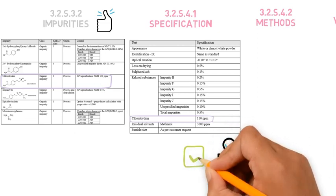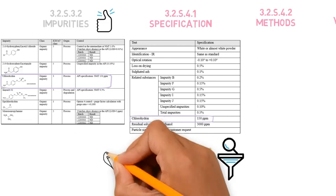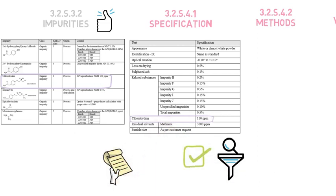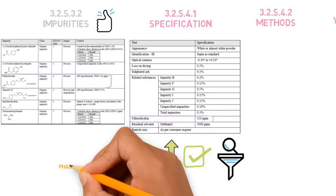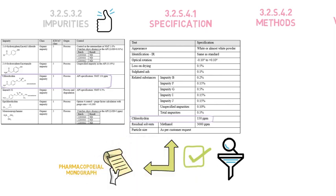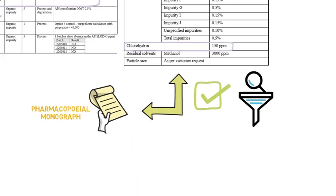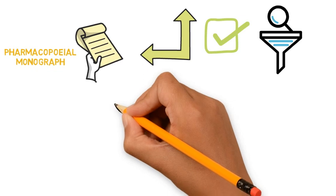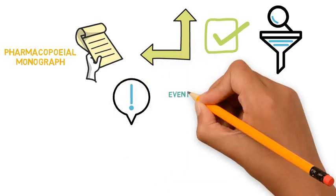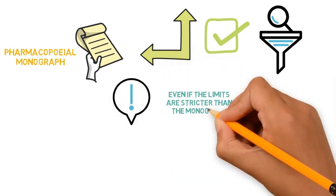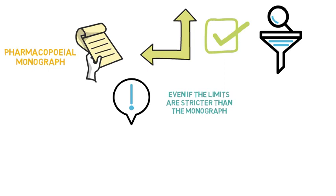If the DMF complies with a certain pharmacopoeia, a comparison with the API pharmacopoeal monograph is done here, and this means that if the API is tested with the test described in the monograph, it will pass. So even if the specification limits are tightened in relation to the monograph limits, we can also consider that it complies with the pharmacopoeia.